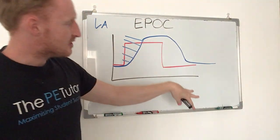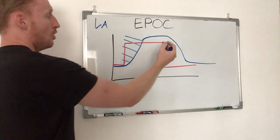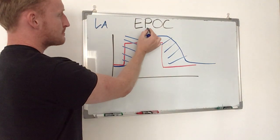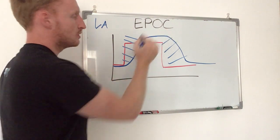So when we finish exercising, we've got this surplus of oxygen consumption, this excess post-exercise oxygen consumption.